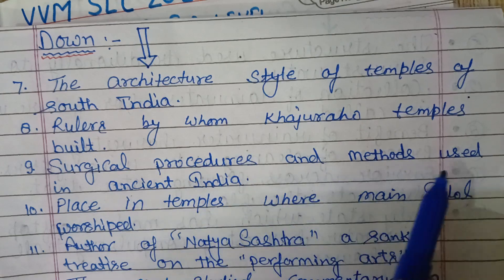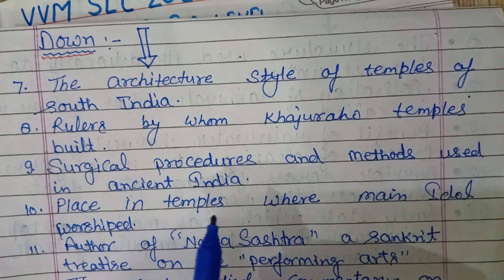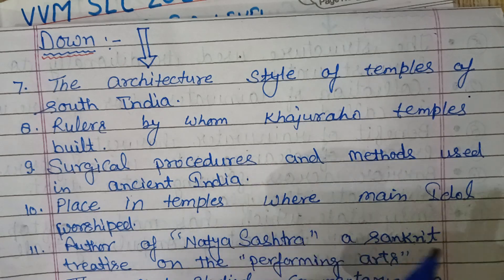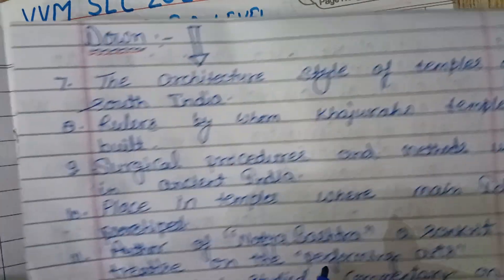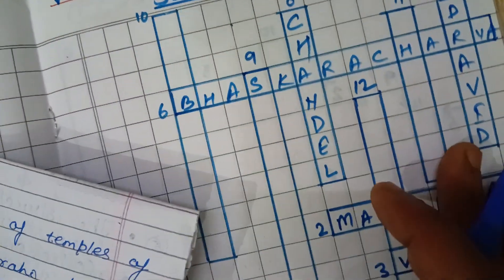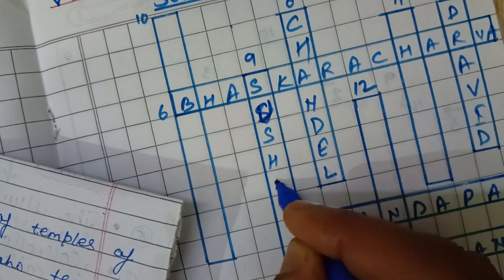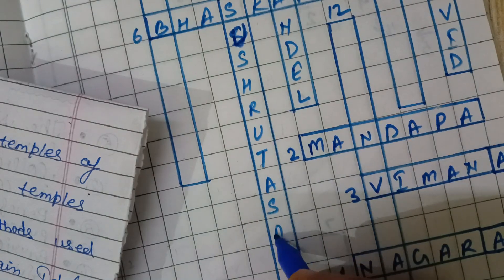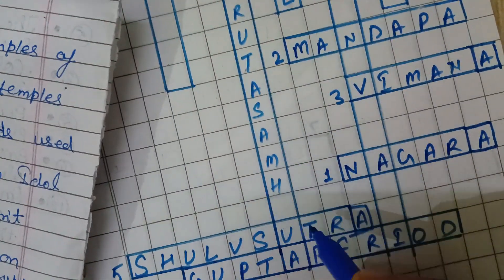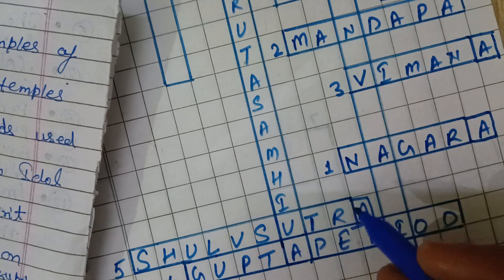Question nine downward: Surgical procedures and methods used in ancient India are discussed in which book? The name of that book is Sushruta Samhita — S-U-S-H-R-U-T-A S-A-M-H-I-T-A — placed at nine downward.